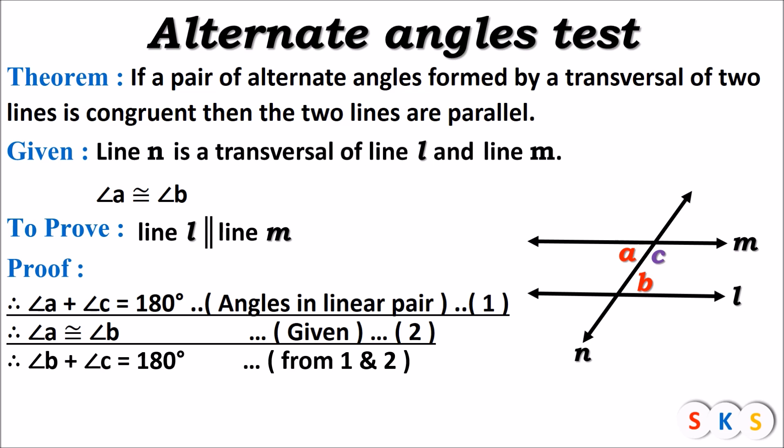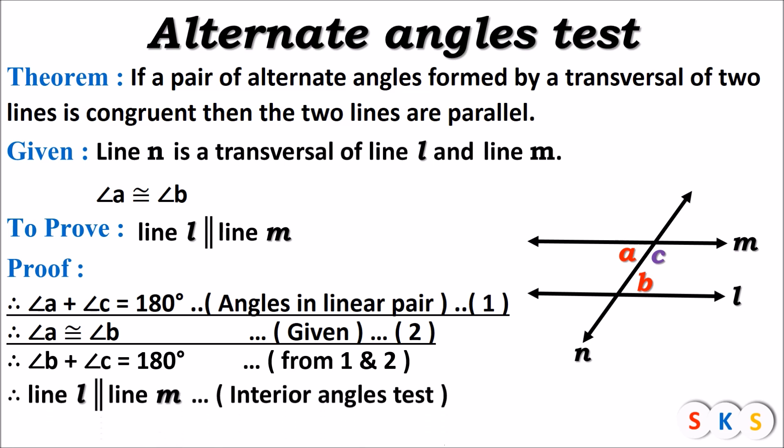Look at this figure — can you find angle b and angle c? What type of angles are they? They are interior angles. And we know that if the interior angles are supplementary, then the lines are parallel. Therefore, line l is parallel to line m, according to the interior angles test.